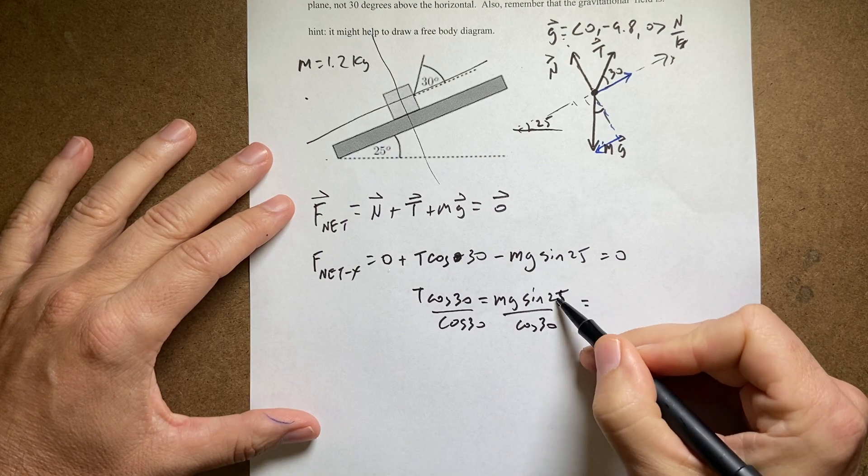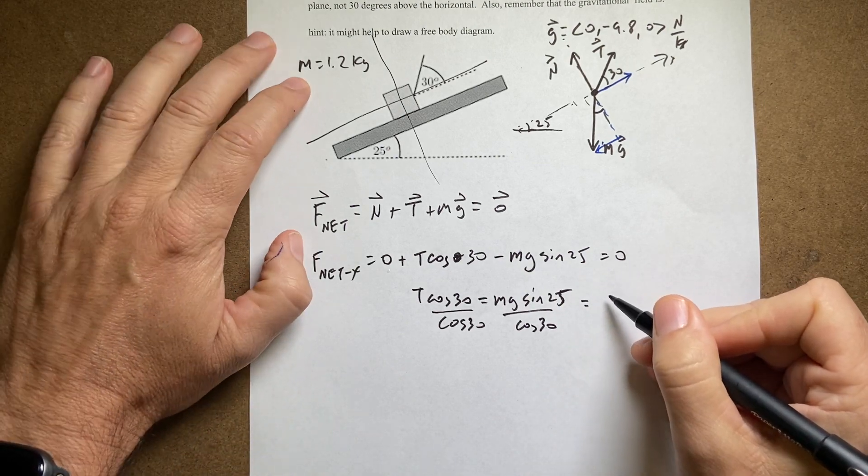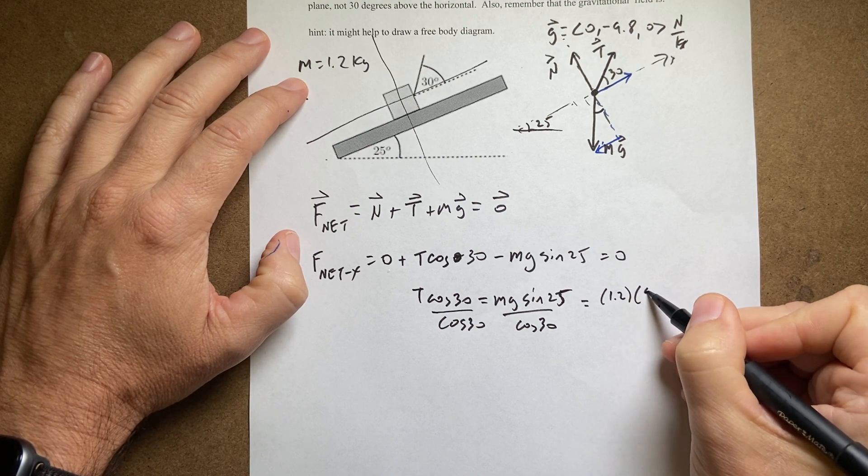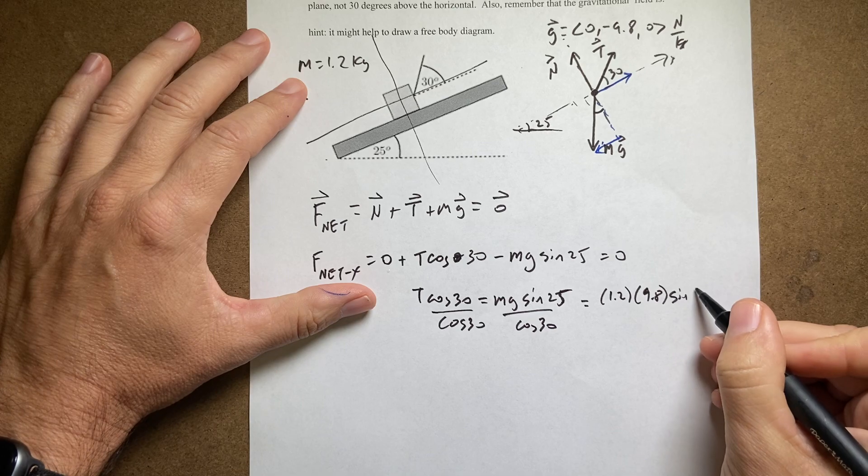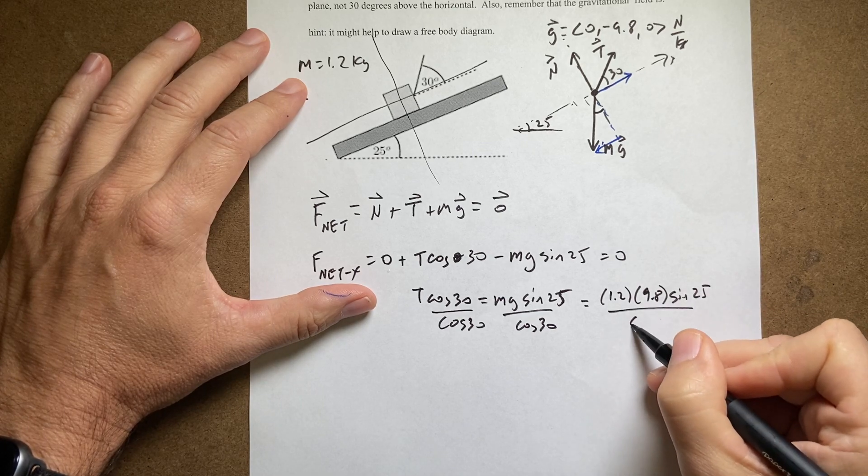Oh wait. That's the 25. Okay. So now I get, now I can put in my mass, 1.2, 9, I'm leaving off the units, 9.8 sine of 25 divided by cosine of 30.